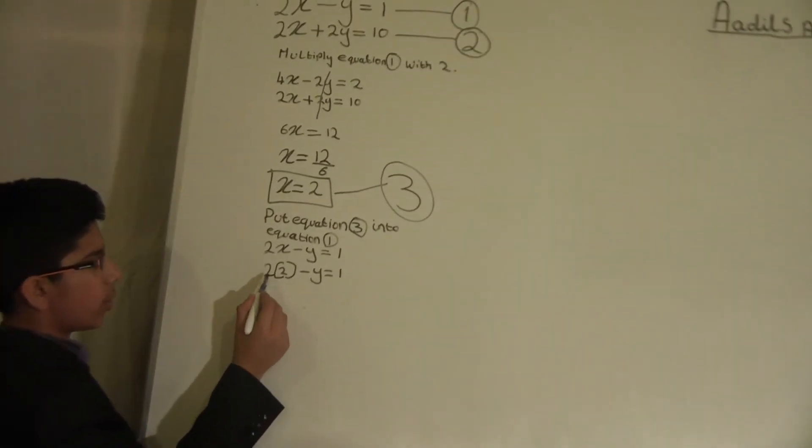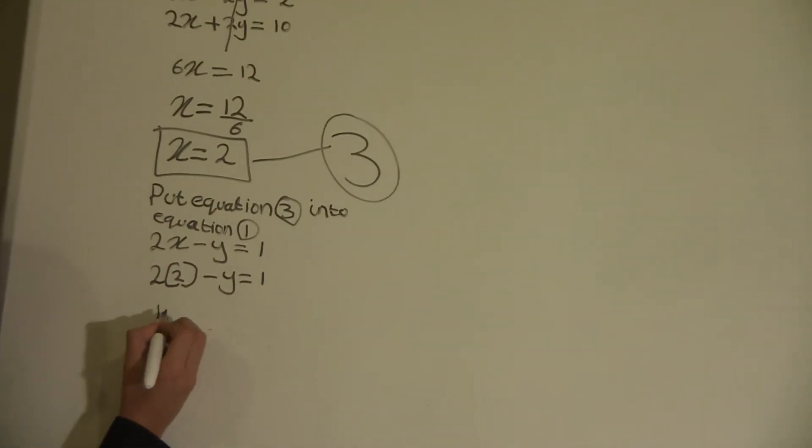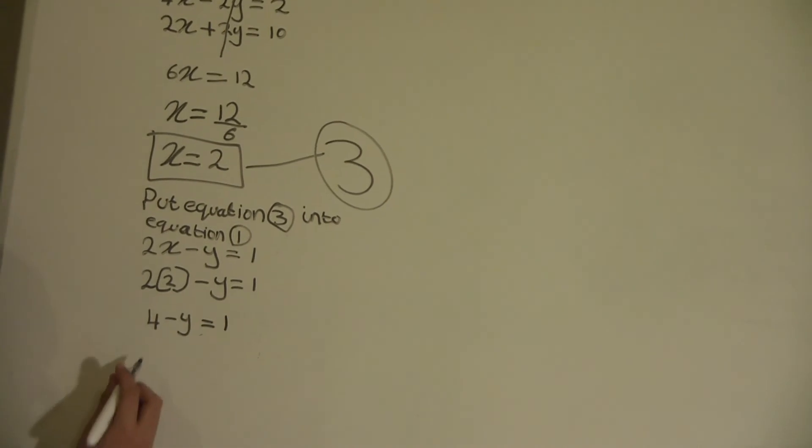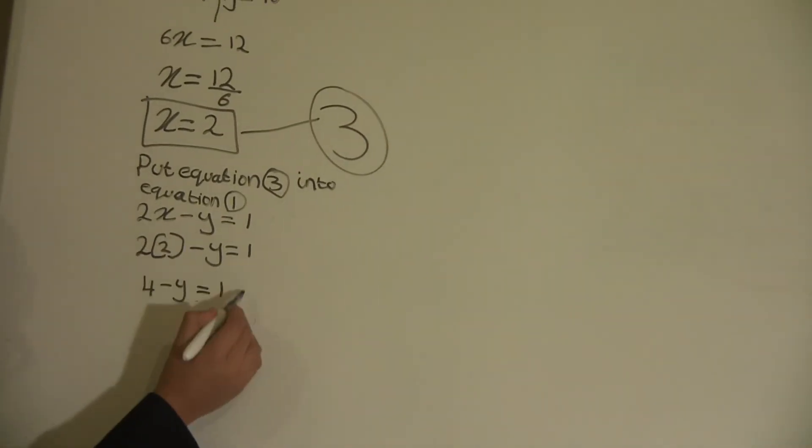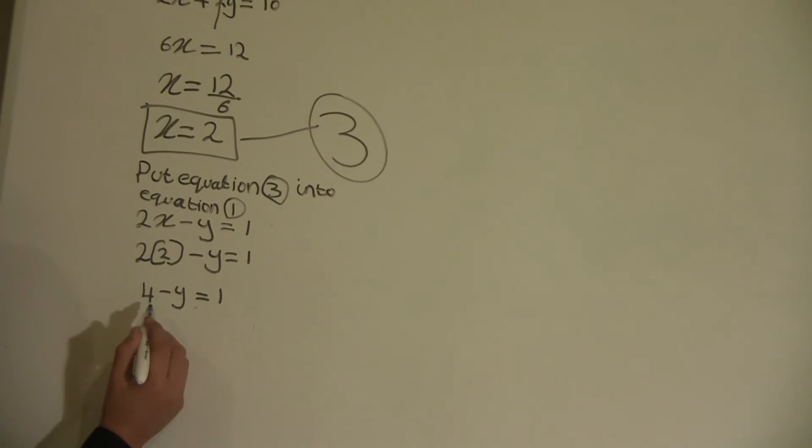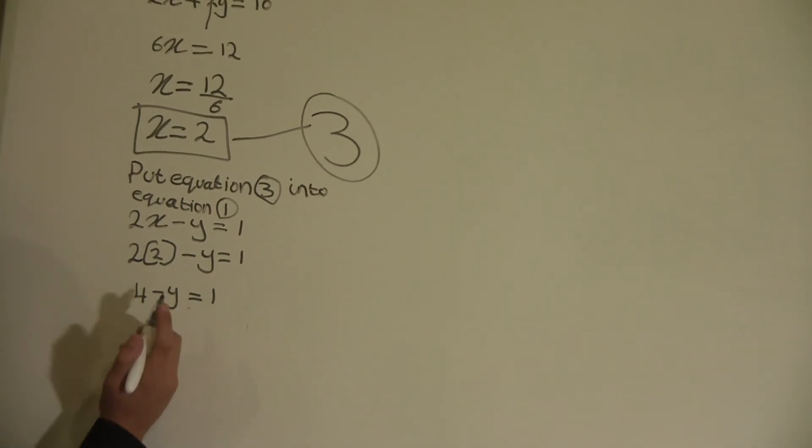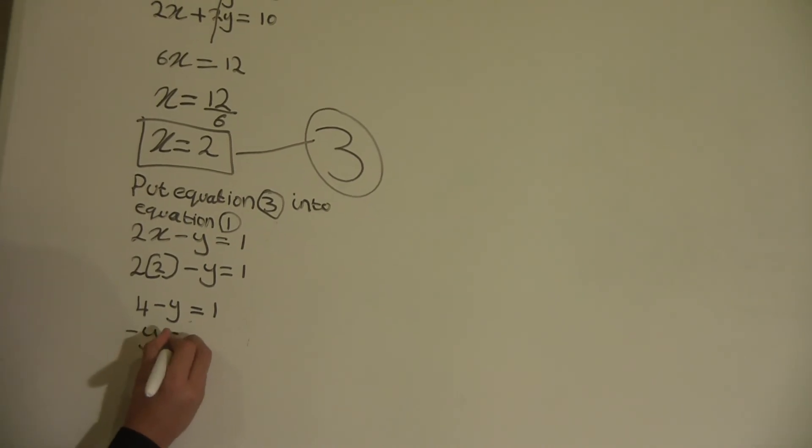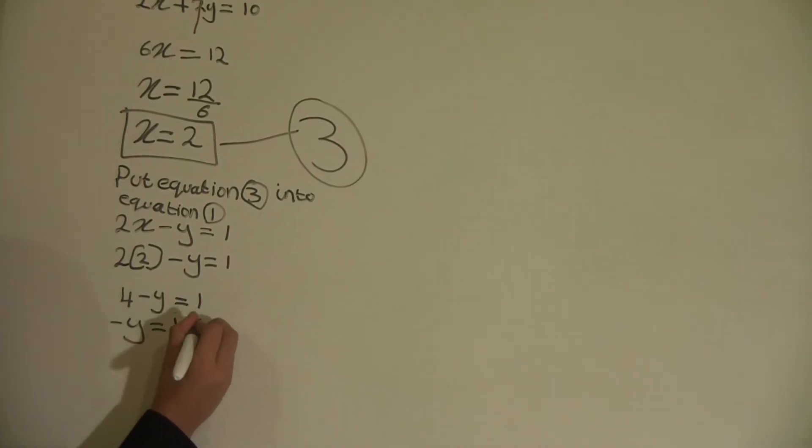When we work that out, 2 times 2 equals 4 minus y equals 1. Now we will have to move the 4 over to the one side so they can both be separate.